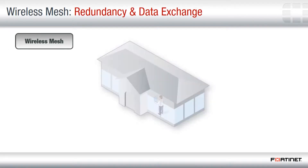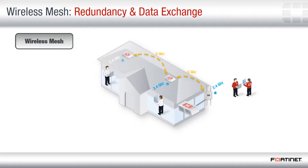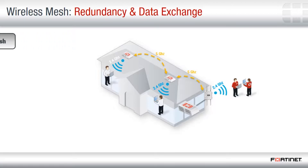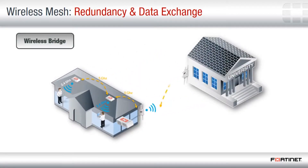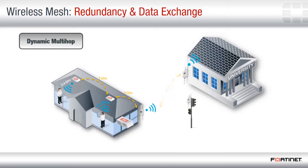Wireless mesh configuration of FortiAPs expands the area of wireless network access, using a 5 GHz data exchange path to the root AP connected to the controller, while offering users connections on the 2.4 GHz frequency. This technology also allows connection between buildings without laying down wire.